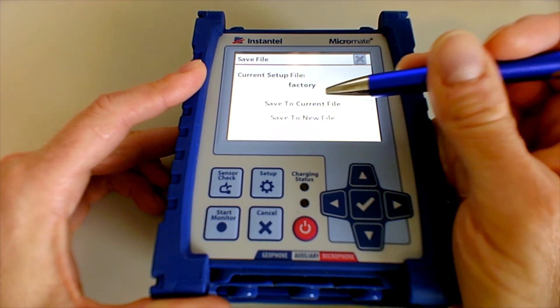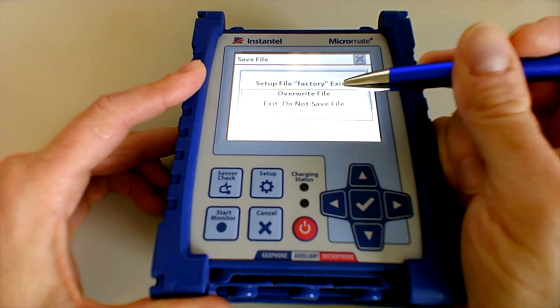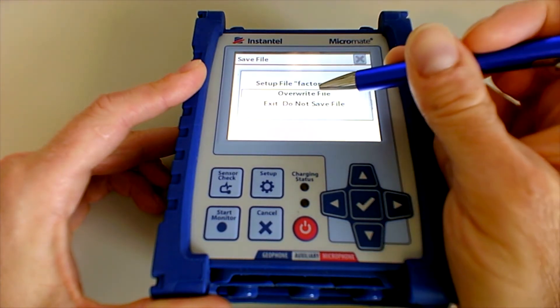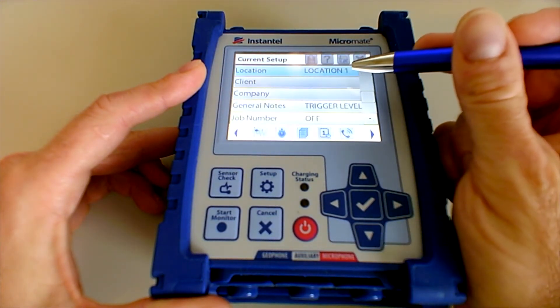In this case, I'm just going to save to the current file. It will double check that I want to overwrite that file with my changes. Yes, I do. And then that change has been made.